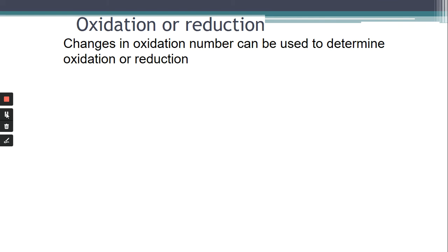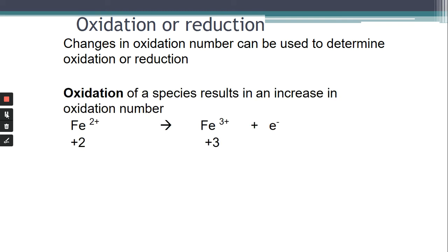Since National 5 we've been looking at oxidation and reduction and saying that oxidation is loss of electrons and reduction is gain of electrons. We took this further in Higher, bringing in hydrogen and oxygen. This time we're going to look at the oxidation number and use that to determine if a reaction is an oxidation or a reduction reaction. For example, here we've got the same ion-electron equation from National 5: iron 2+ changing into iron 3+.